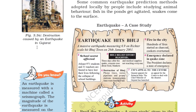Hundreds of fires started as charcoal cookers overturned. An emergency was declared in the earthquake zone, with the president declaring a state of emergency. The Chief Minister of Gujarat launched an appeal to the center for financial help to deal with the disaster.